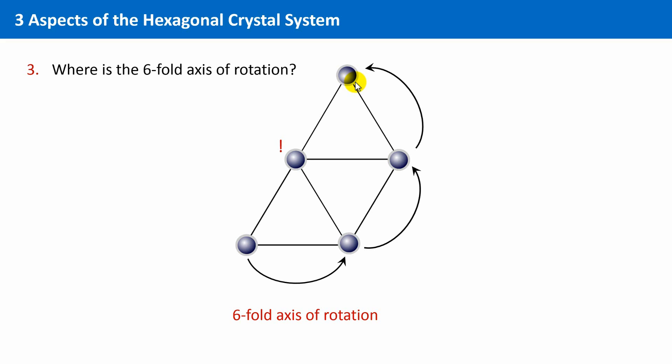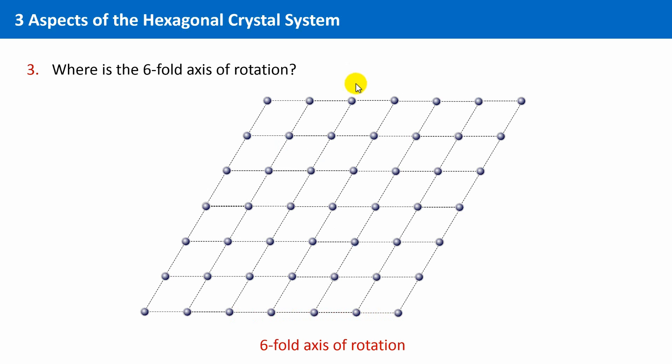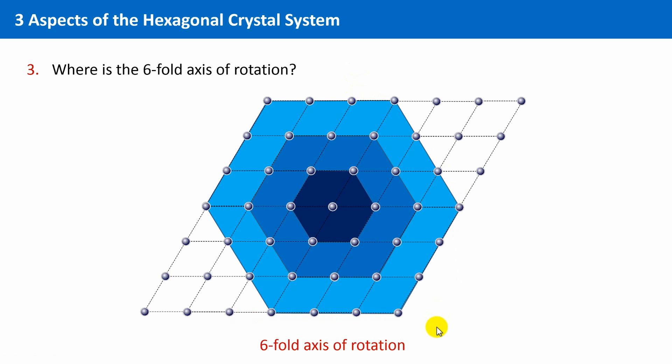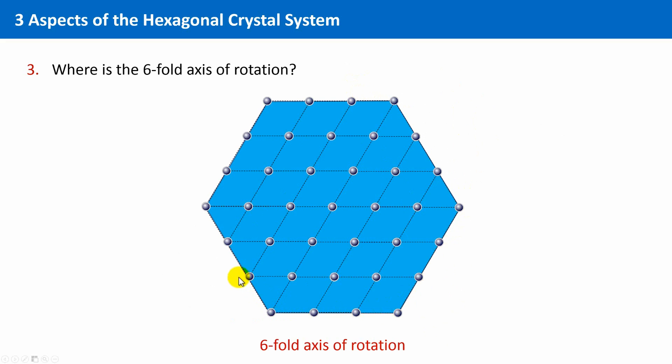The hexagonal symmetry is easier to recognize if we take a larger part of the crystal lattice. Now it is evident that this lattice does indeed possess hexagonal symmetry, in particular if we wipe out these edges. I think you understood, and we will stop here for now.